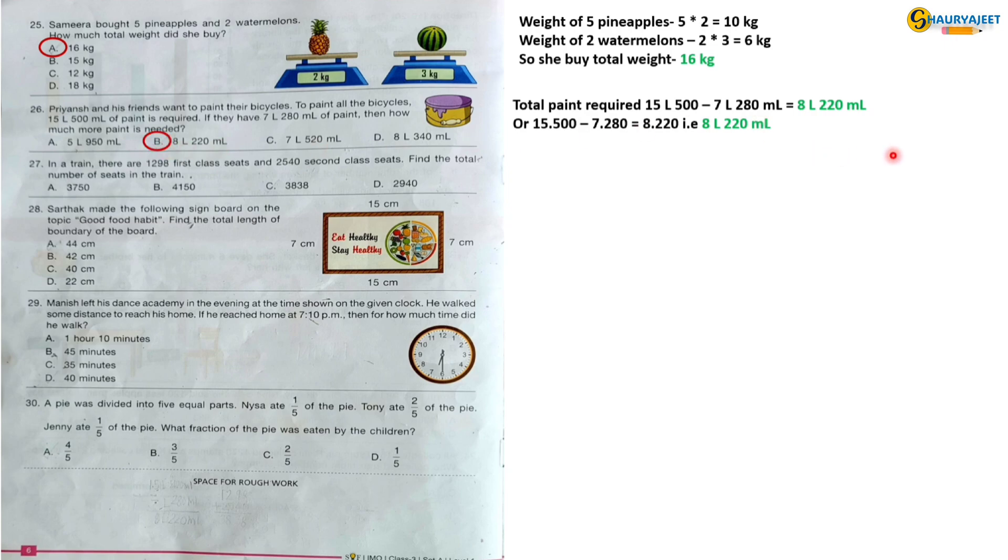Question 27: In a train, there are 1298 first class seats and 2542 second class seats. Find the total number of seats in the train. If we add both of them, the answer will be 3838 seats. So the correct option is option C, 3838 seats.